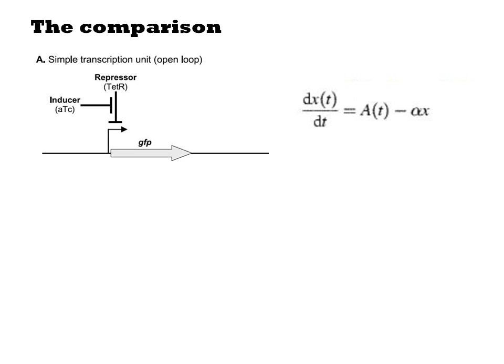Let's go through the math. First let's consider the rise time of the simple transcription unit. Since there is no feedback in this circuit, A is constant and has the value beta, which is the transcription initiation rate of the non-repressed promoter. The rate of change of protein X, or dx/dt, is equal to the production rate A minus the first-order dilution or degradation term minus alpha times X.